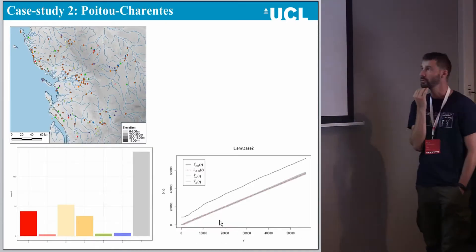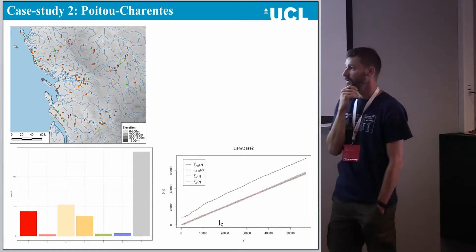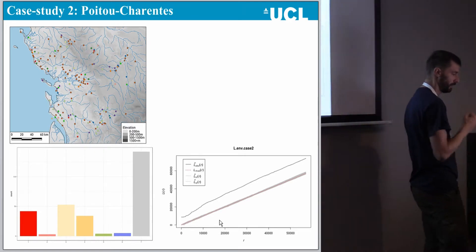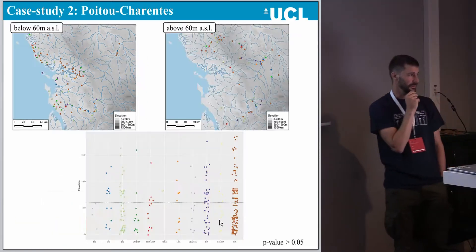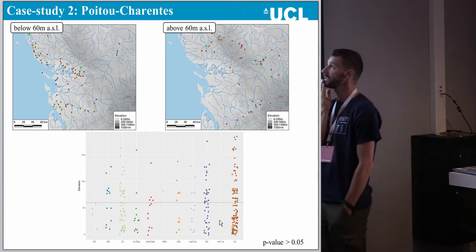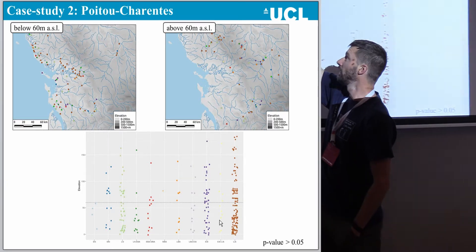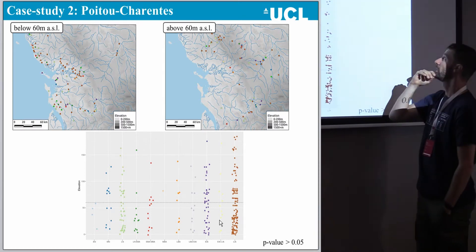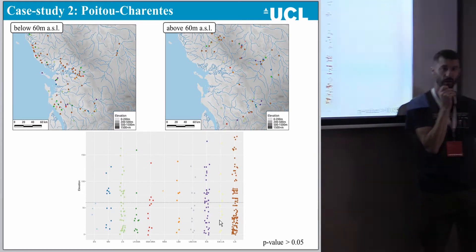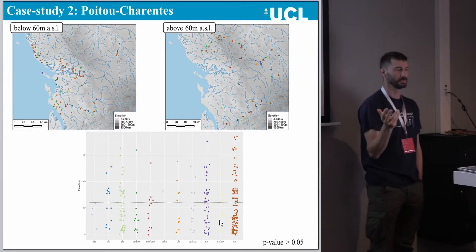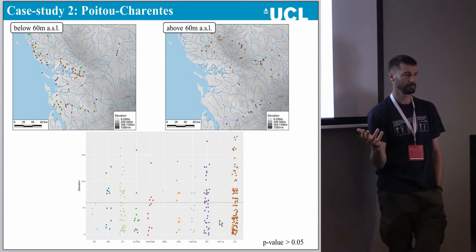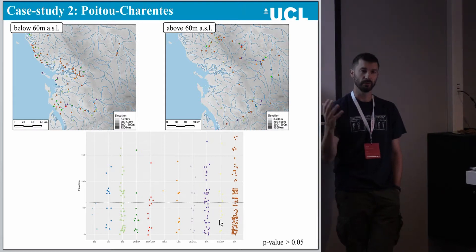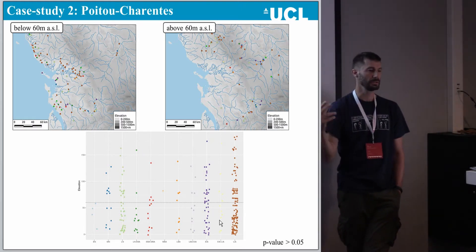The same analysis can be repeated for Poitou-Charentes, with the same level of clustering but a different type of modern landscape being excavated. In this case I've used a 60-meter threshold. You can clearly see the difference between the use of certain river valleys and the coastal/swampy areas versus the uplands. But when you run the chi-square on the jitter plot, once more there is no difference — the lowlands and the uplands follow exactly the same trend in terms of number of sites per period.